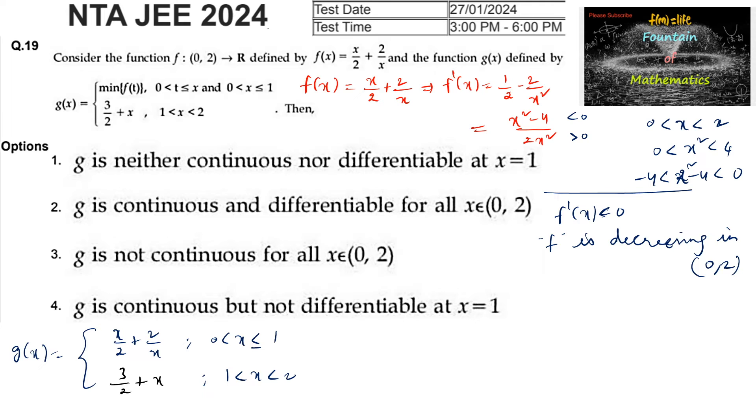Consider the graph on the interval (0, 2). From 0 to 1 we have one part, and from 1 to 2 the graph follows 3/2 + x, which is a linear function.